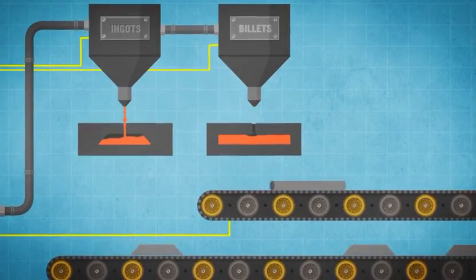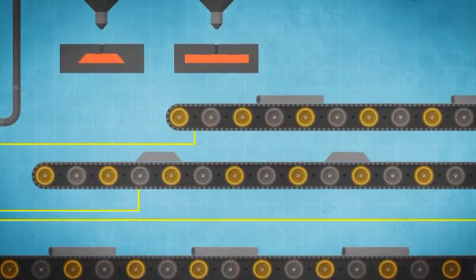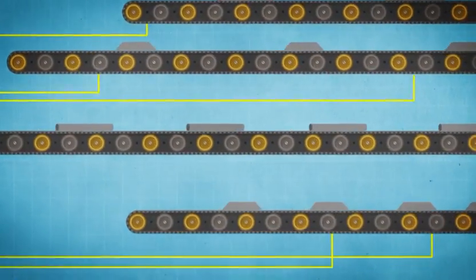We make aluminum in different shapes: foundry, billet, and small ingot.